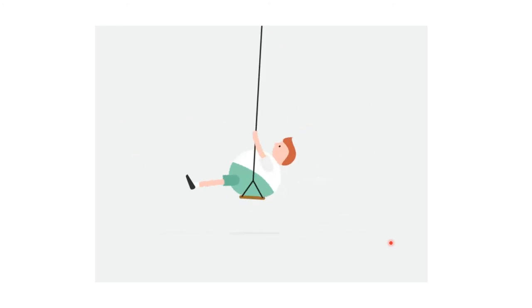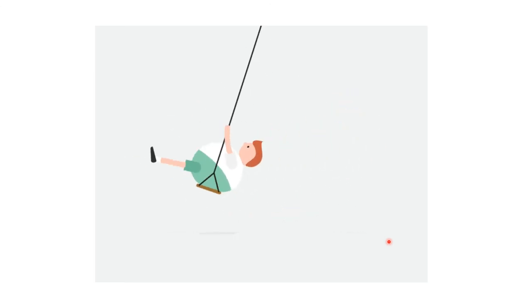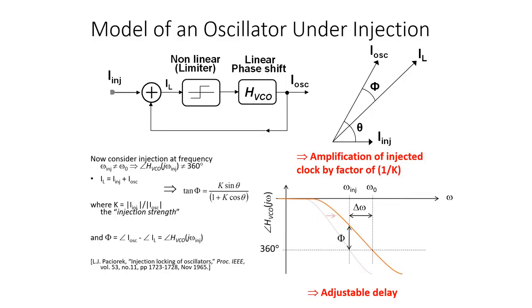There's a phase shift in steady state between the injecting input and the oscillating waveform, and we have to inject a little harder to get it to lock. We can use this phasor model to better understand the relationship between the injecting input phase and the ILO output phase. In this case, we're injecting at a frequency different from the resonant frequency of the ILO, different by some amount delta_omega. As a result, the phase shift through H_VCO is no longer 360 degrees. In the situation pictured here, where delta_omega is negative, the phase shift is less than 360 degrees.